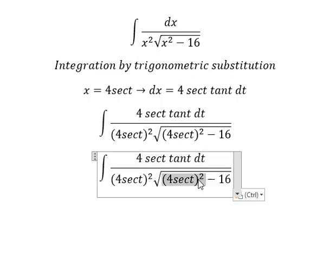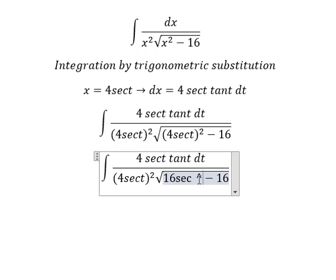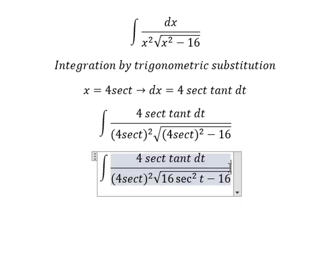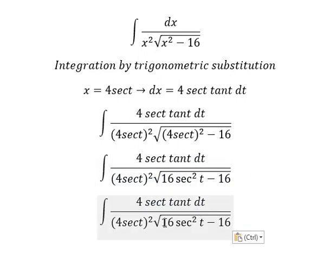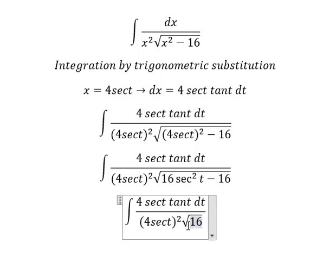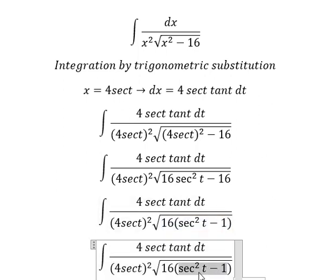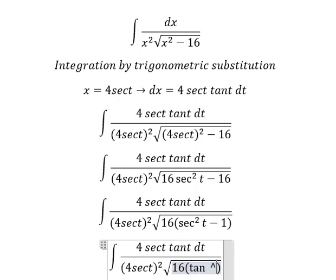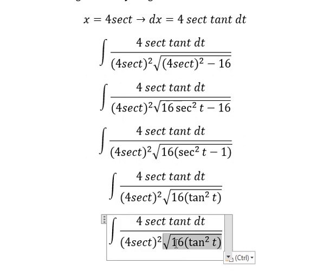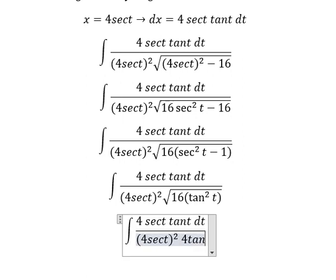This one we have 16 secant squared t. For 16 minus 16 we can do factorization, so this is tan squared t. The square root of this one, we have 4 tan t. This denominator is 16 secant squared t.